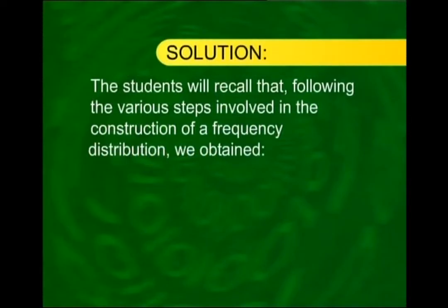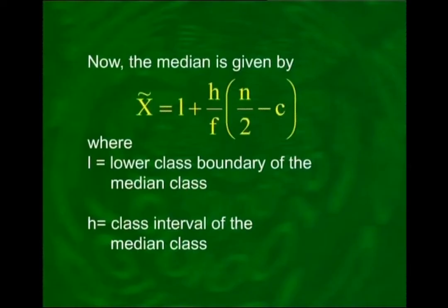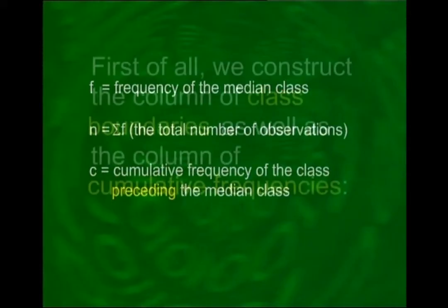Following the steps involved in constructing a frequency distribution, we obtained class intervals 20–29, 30–39, 40–49, and so on, with frequencies 6, 18, 11, 11, 3, and 1. The median is given by x̃ = L + (H/F) × (N/2 − C), where L is the lower class boundary of the median class, H is the class interval, F is the frequency of the median class, N is the total number of observations, and C is the cumulative frequency of the class preceding the median class.